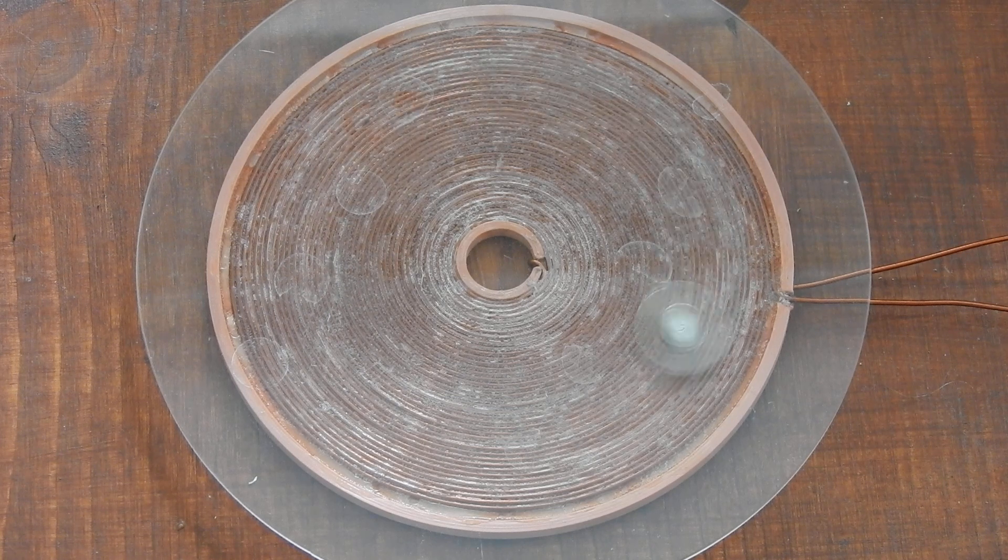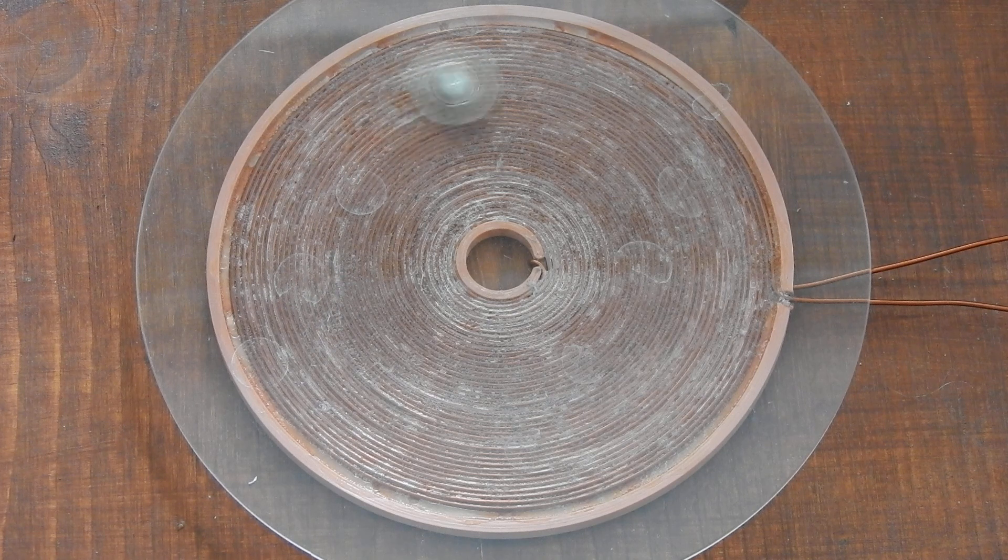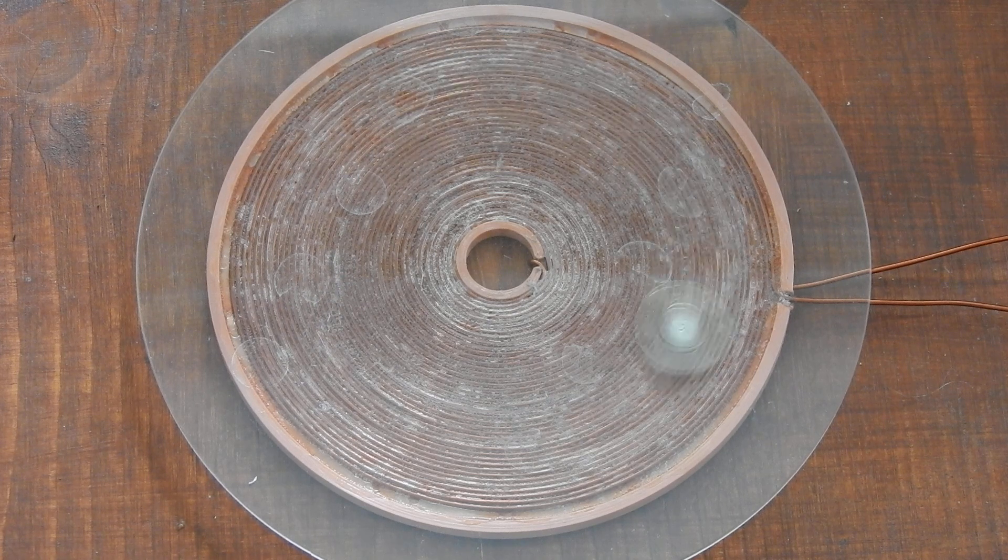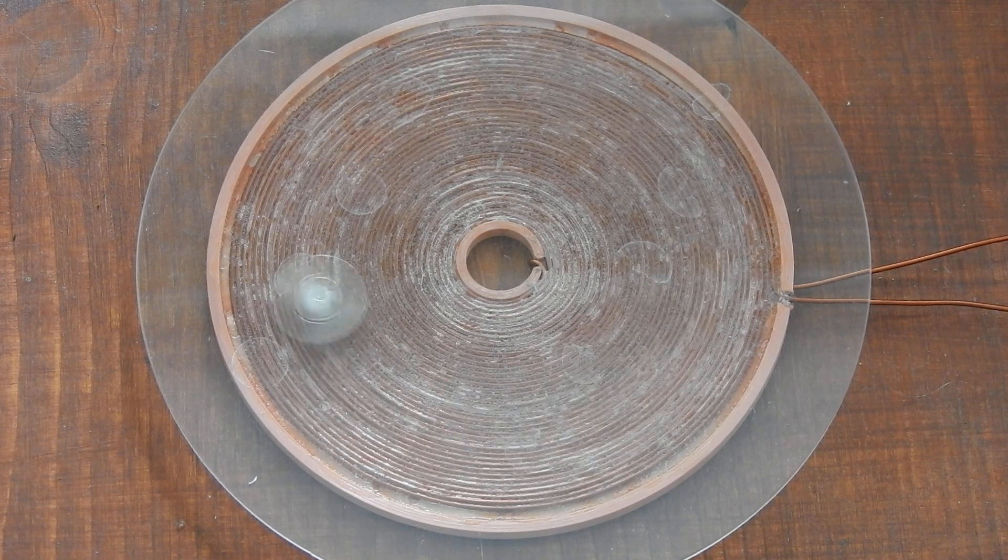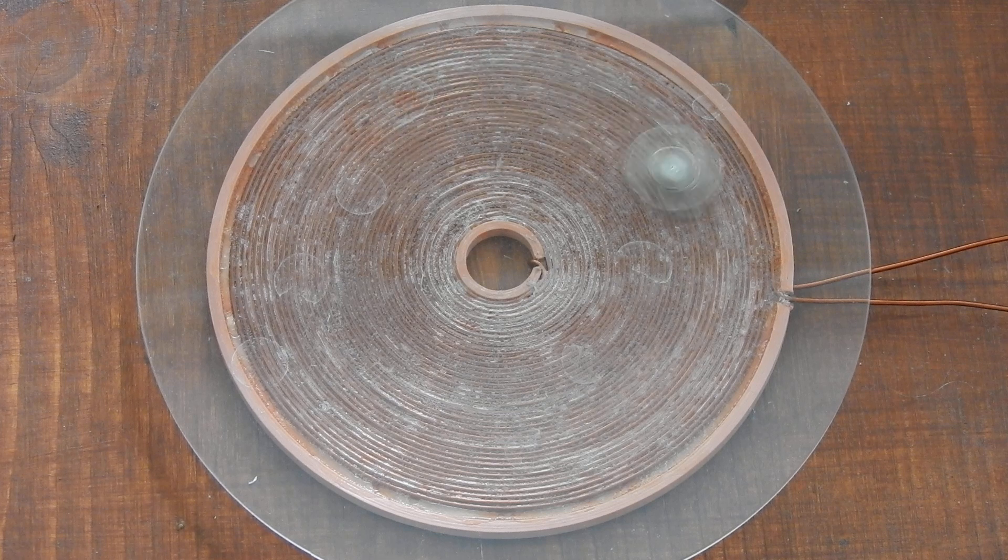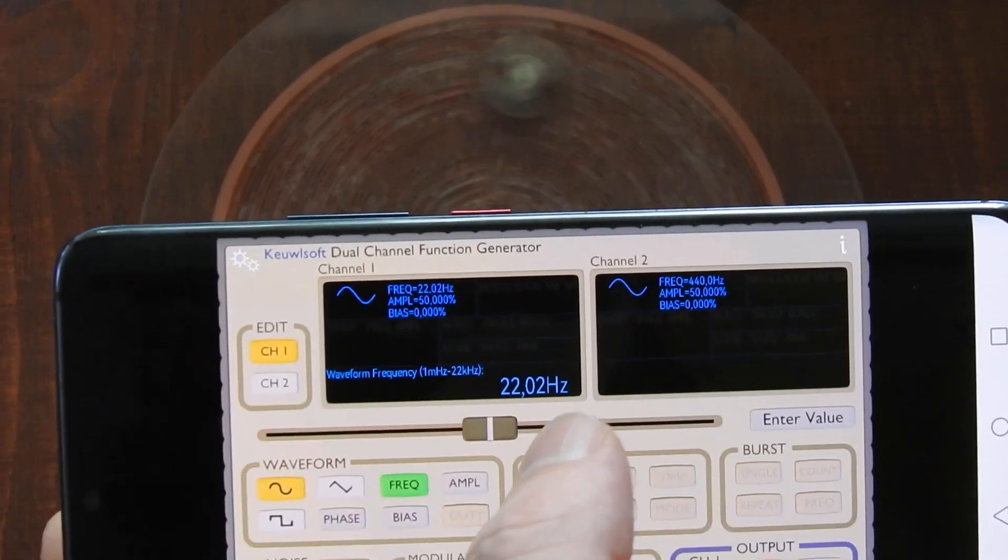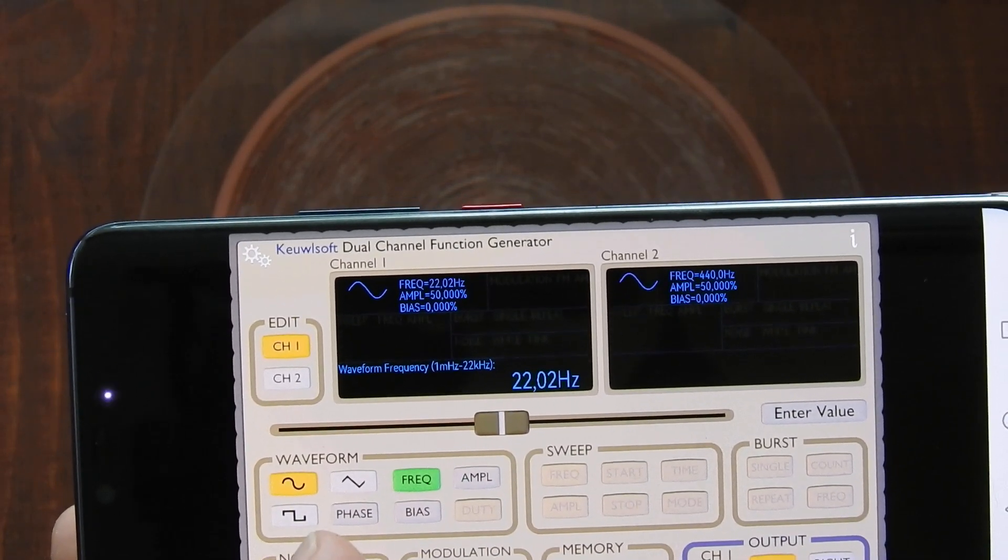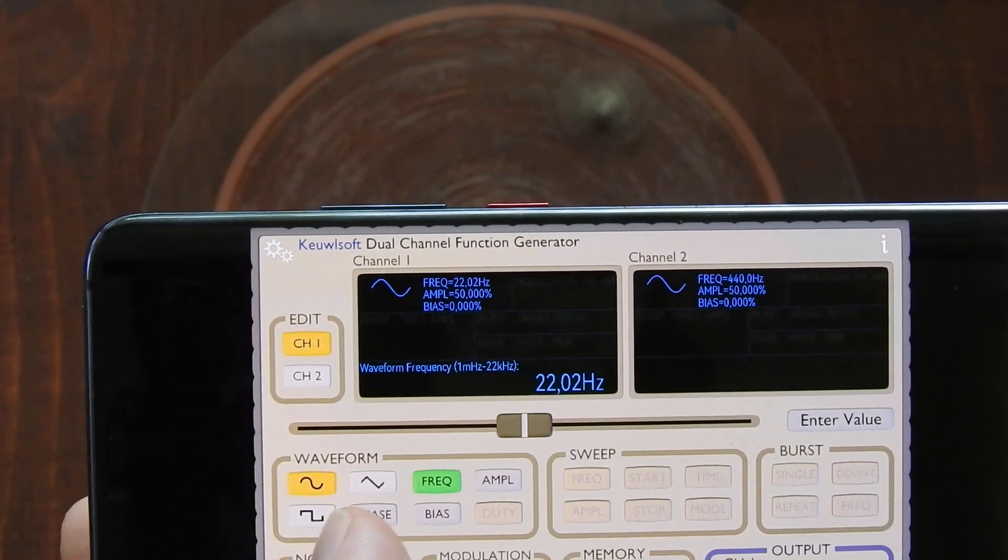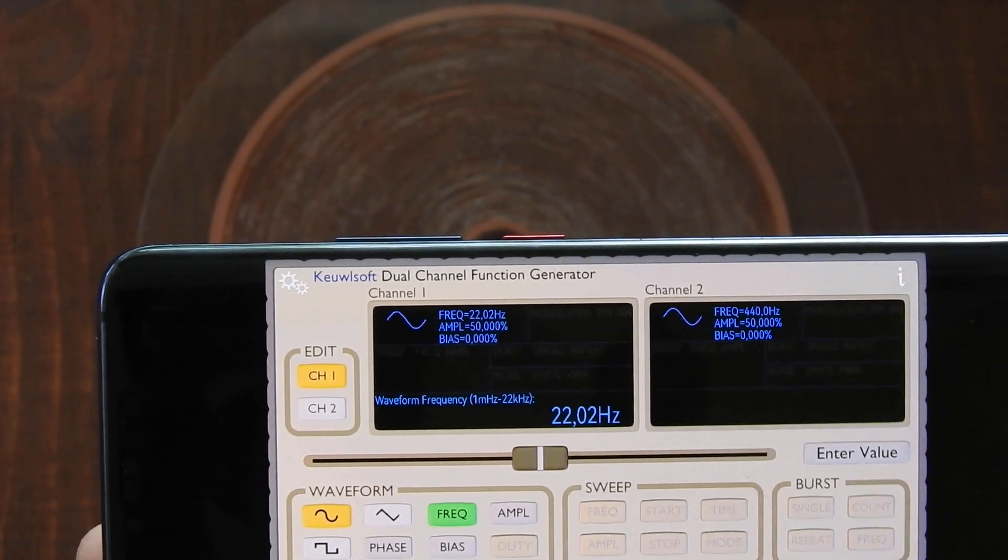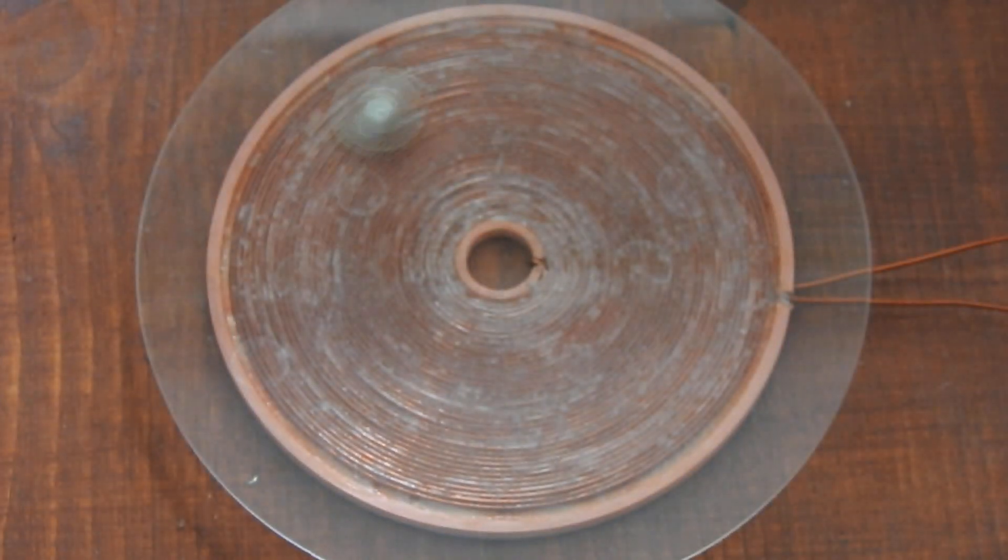So this is the basic principle of it. It is connected to a small audio amplifier that is fed an AC signal from my smartphone which is connected via Bluetooth. So right now I am using a frequency of 22 Hz, a normal sine wave signal, simple as that.